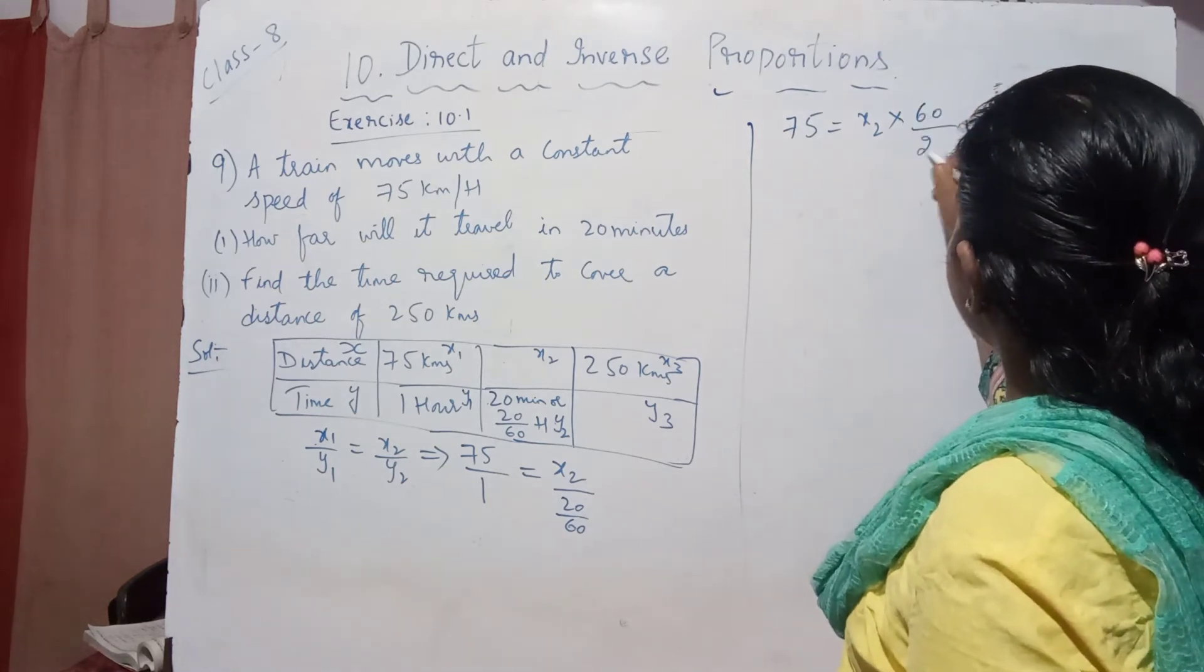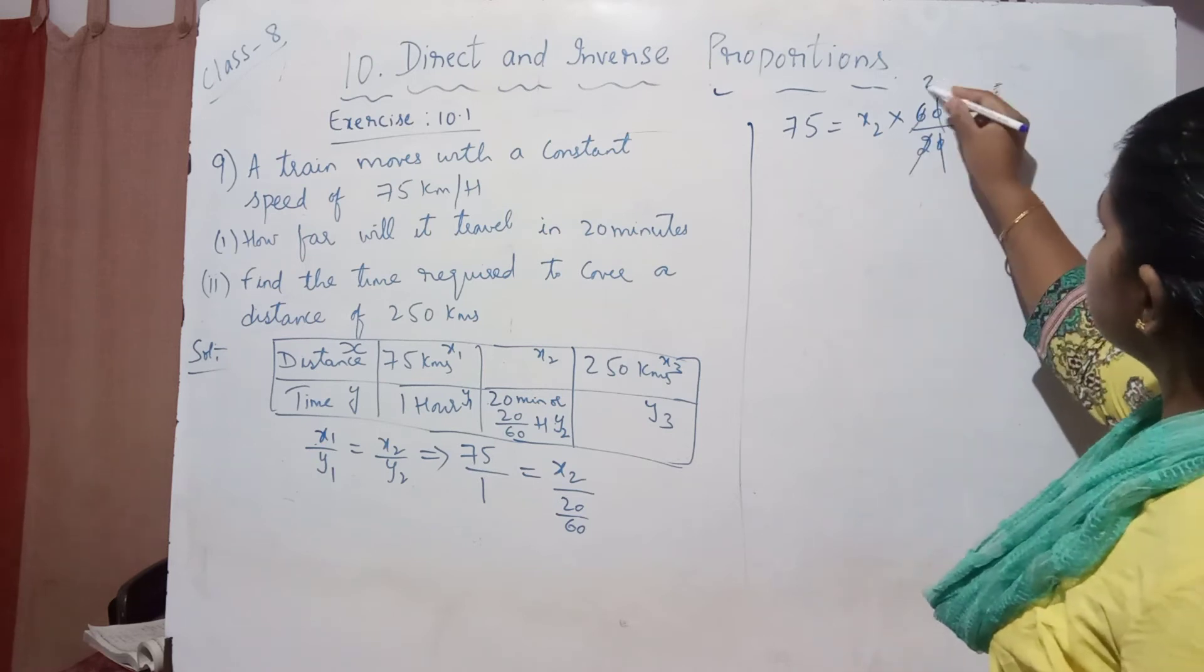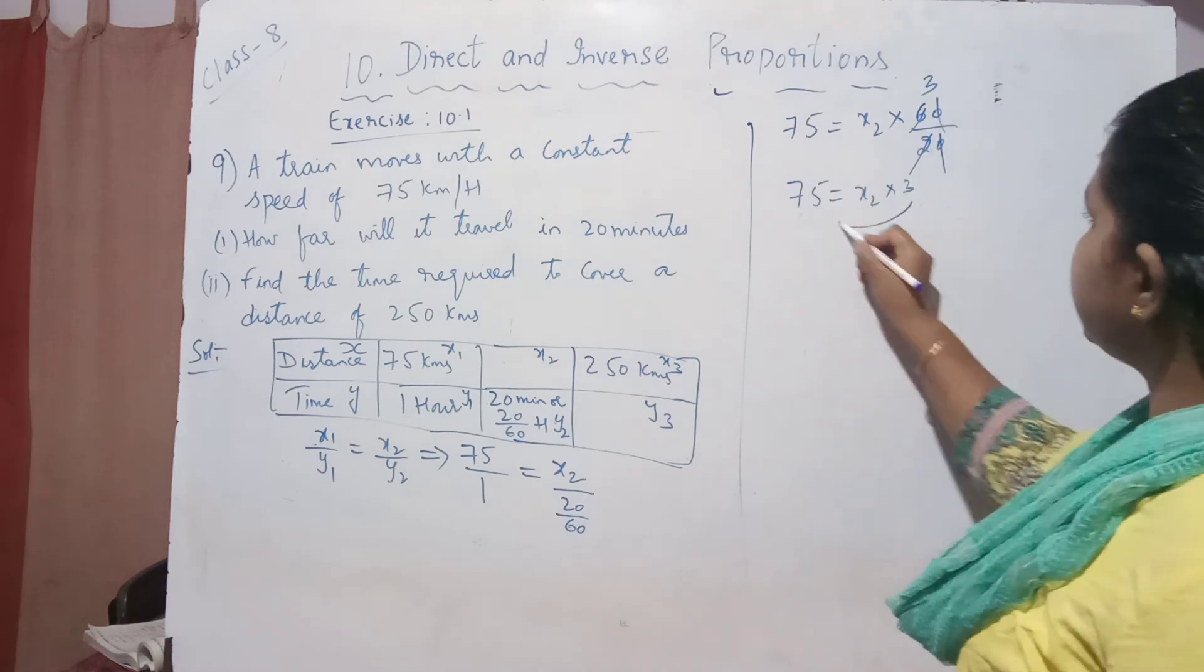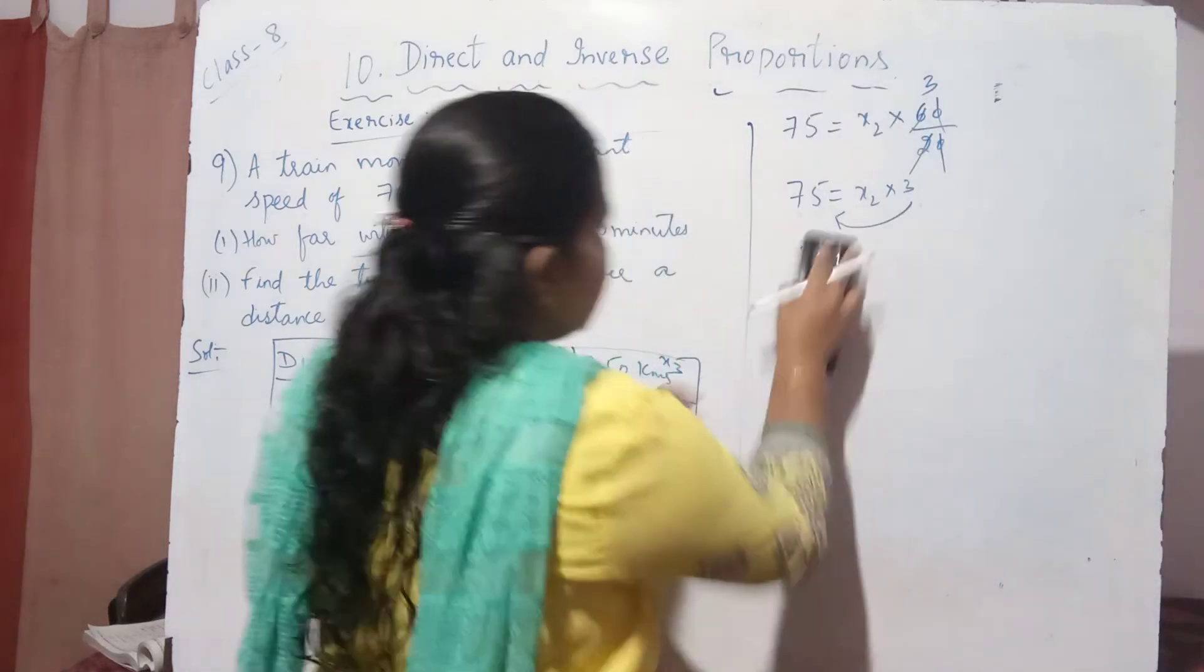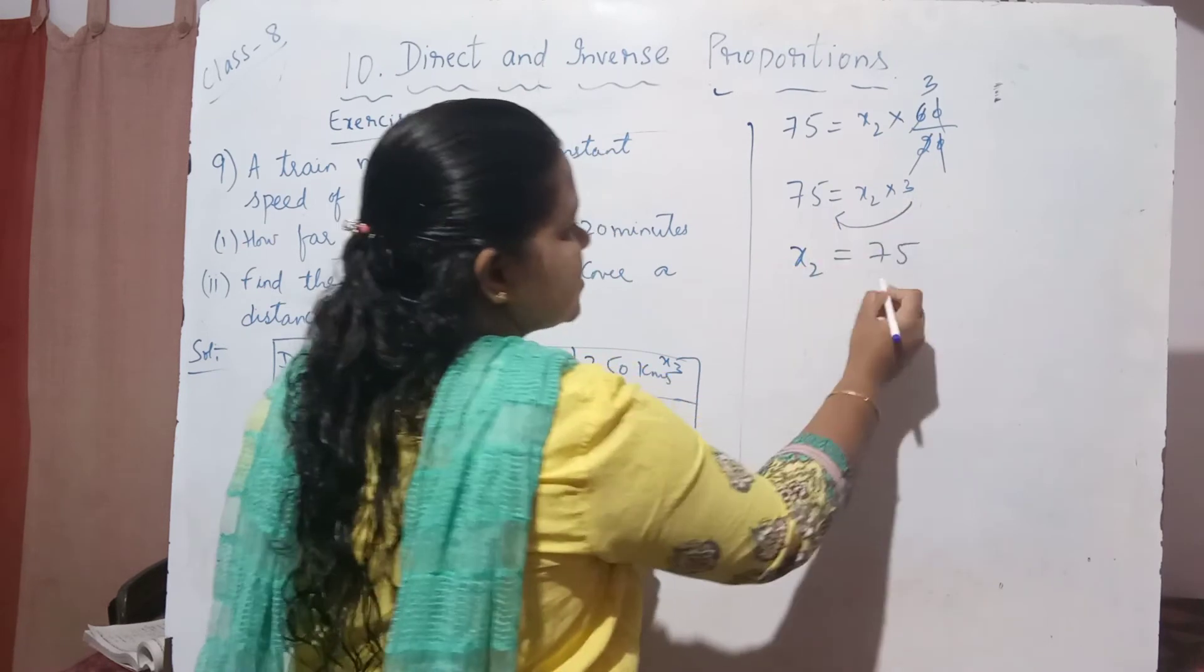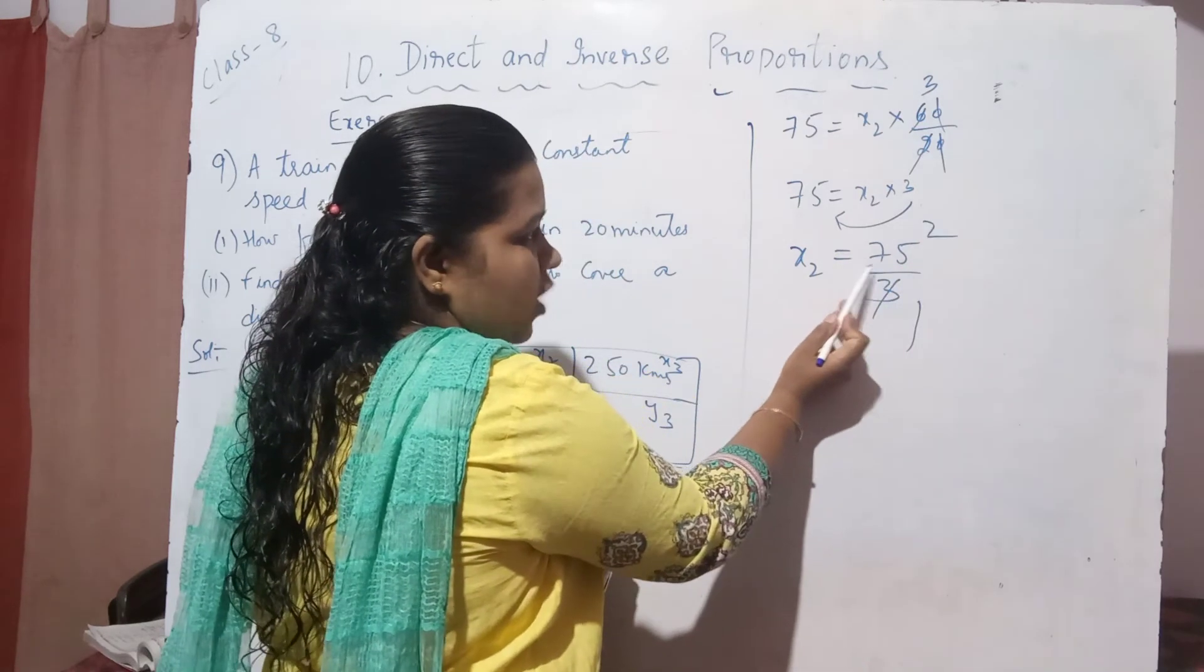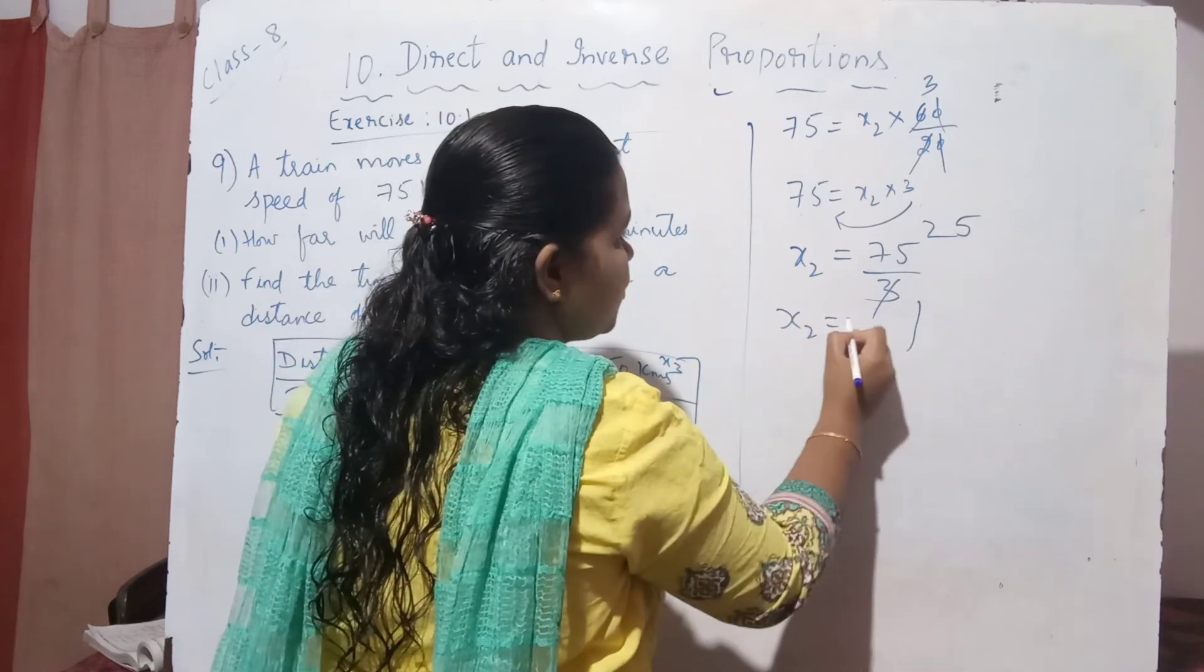Cancel this: 2, 2 gets cancelled. So 75 equals x2 into 3. I want the value of x2. Bring this 3 to the other side. So x2 equals 75 divided by 3. Cancel it: 3, 1 is 3, 3, 2s are 6. From 7, if I remove 6, 1 will be left out. It becomes 15. 3, 5s are 15. So x2 equals 25.